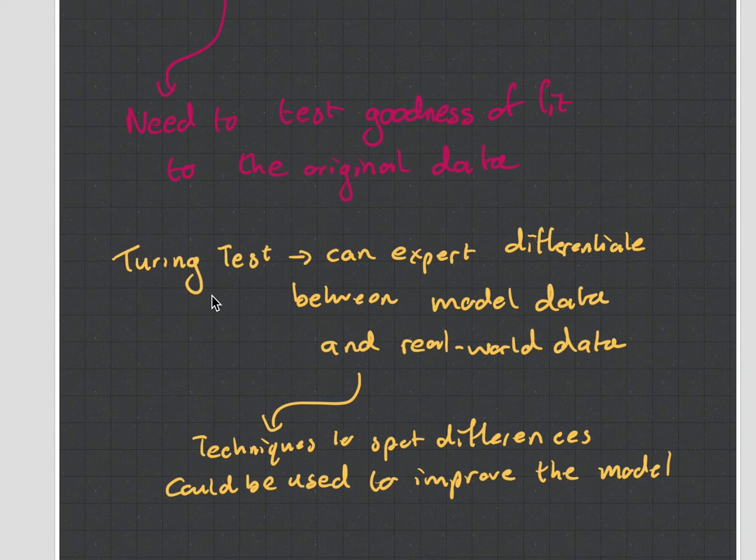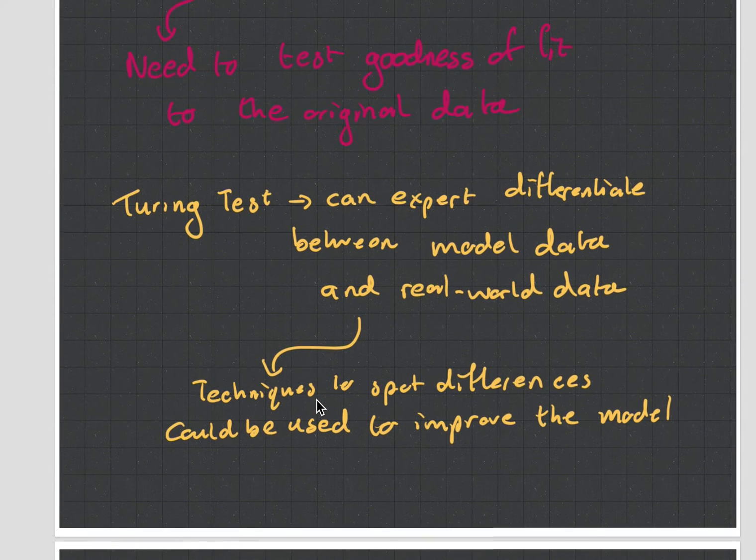Turing tests are quite cool. They use it to see if a computer has self-awareness in the movies. But we use it to see if an expert can tell the difference between model data and real-world data. You might get a lawyer to make a case, the model makes a case, and then someone in the legal profession says which one was made by the lawyer and which by the statistics. If they can't tell the difference, you've got a very good model.